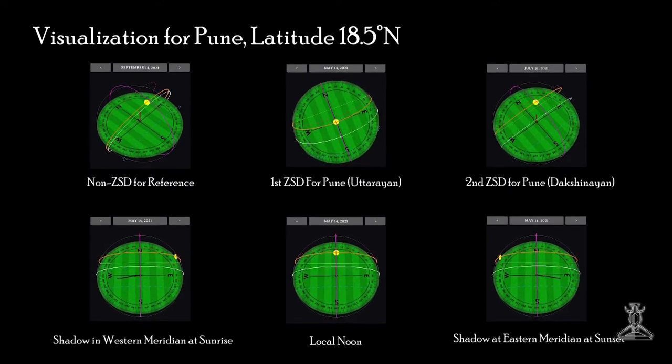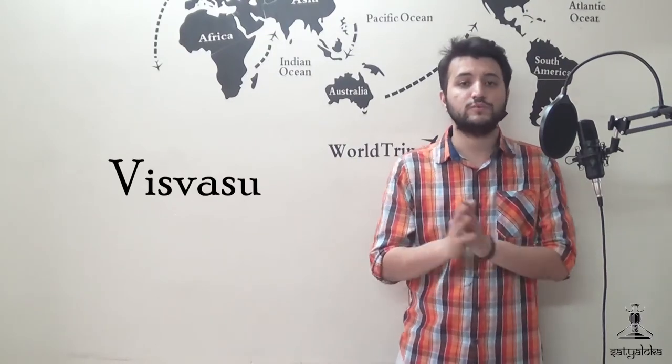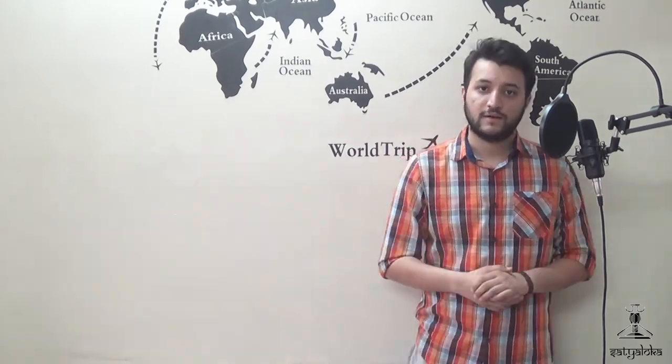As the sun tilts westward the shadow of the Chaya Shankhu falls eastward and gradually grows larger. Thus the ninth Muhurta is again the Vishwasu Muhurta. Similarly, in reverse order, the Raudra Muhurta appears again at the time of sunset.